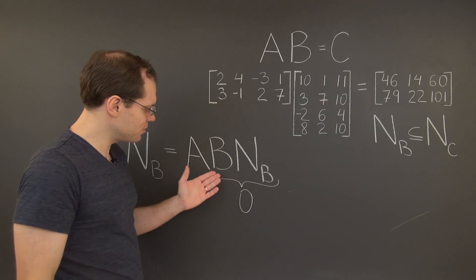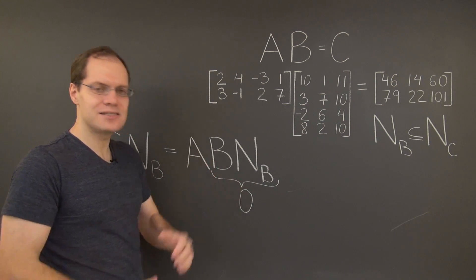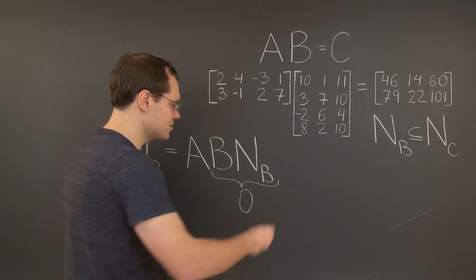Therefore, the entire product equals A times the 0 matrix. And of course, A times 0 is 0.